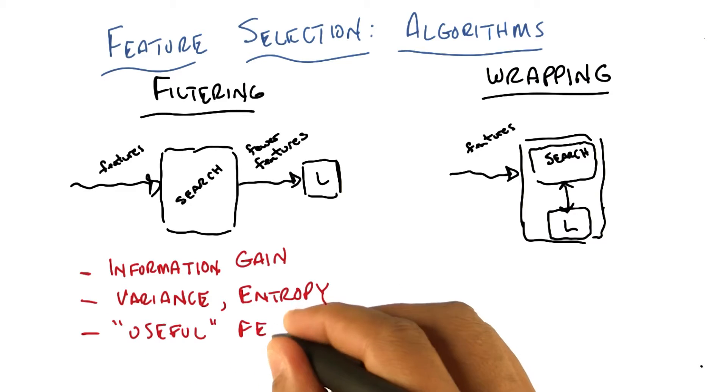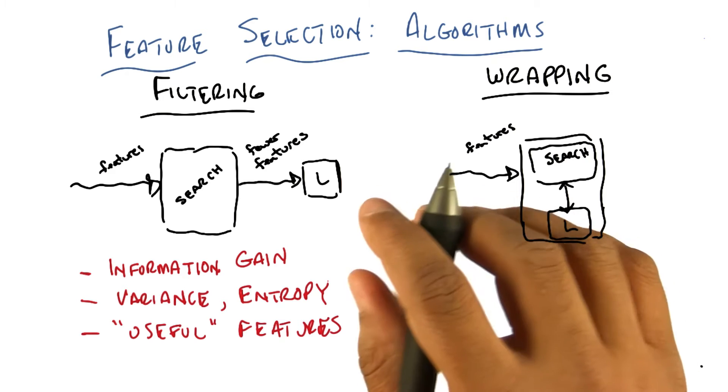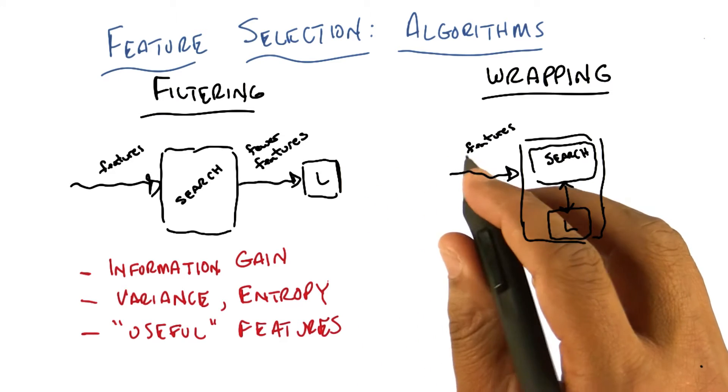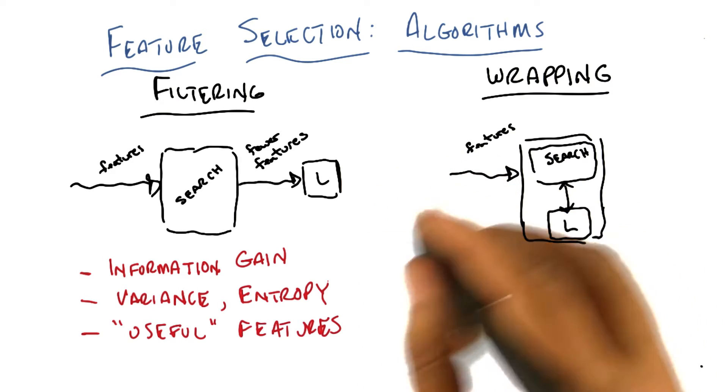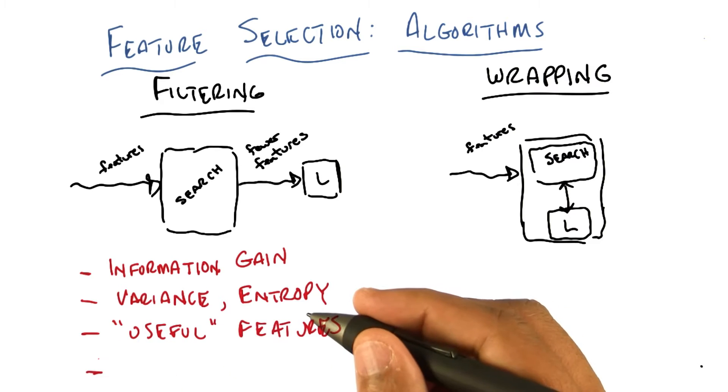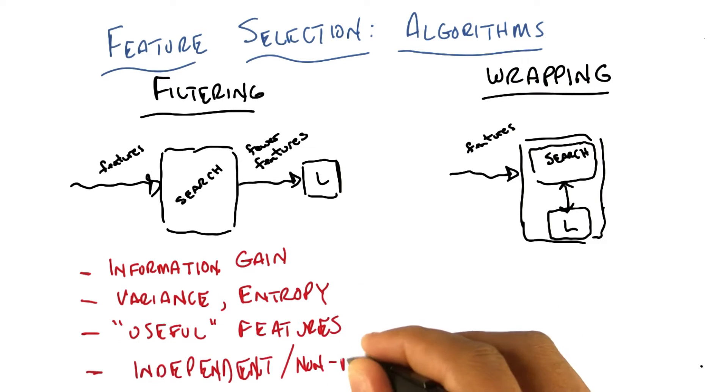In fact, why don't we just write that down? Oh, I have another one. So if there's features that are linearly dependent on other features, then maybe get rid of them. So you want independent features? Yeah. Or maybe we'll say non-redundant.